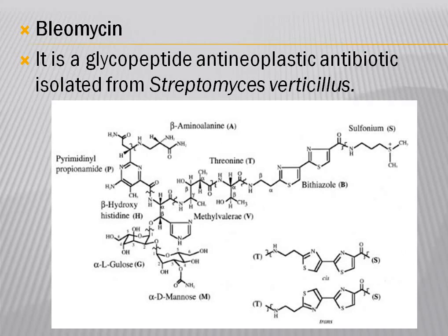The third antibiotic class is bleomycin, a glycopeptide antineoplastic antibiotic isolated from Streptomyces verticillus. It is a mixture of closely related compounds, bleomycin A2 and B2. They occur naturally as blue copper chelates; copper is removed by chemical reduction to obtain a copper-free white solid bleomycin. The complex structure of bleomycin can be categorized into four parts.